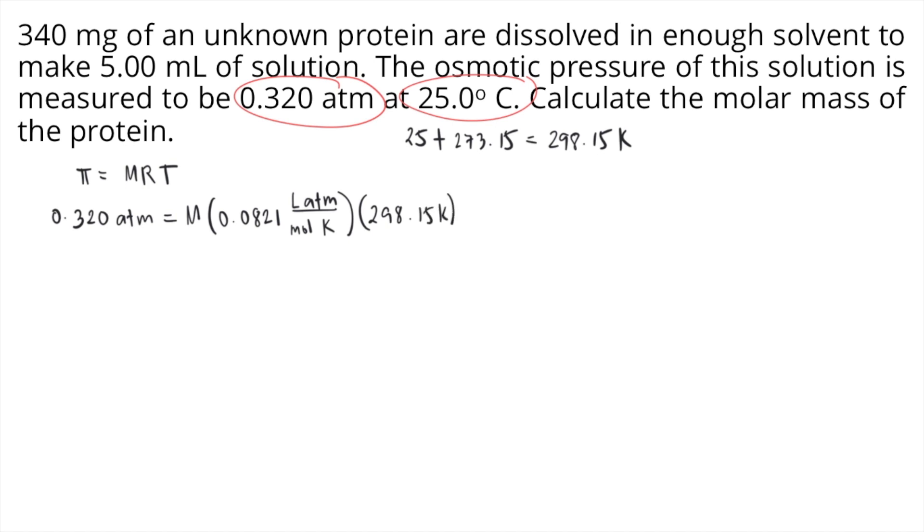First thing we can solve is actually the molarity. How do we solve the molarity? We simply divide both sides of the equation by 0.0821 times 298.15. So we also do that to the other side: 0.0821 litre atmosphere per mole Kelvin times 298.15 Kelvin.